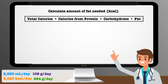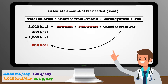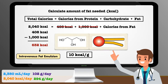At this stage, we have the total calories, calories from protein, and calories from carbohydrate. To complete the fourth step and calculate the amount of fat needed, we subtract the protein calories and the carbohydrate calories from the total calories: 2,040 minus 408 minus 1,000 equals 632 calories from fat. Similar to carbohydrate, fat does not provide the standard 9 calories per gram found in food. Fat is infused as an intravenous fat emulsion, or IV-FE, and emulsifying agents like glycerin and egg phospholipids increase the energy load to more like 10 calories per gram. Dividing 632 calories by 10 gives us 63.2 grams.